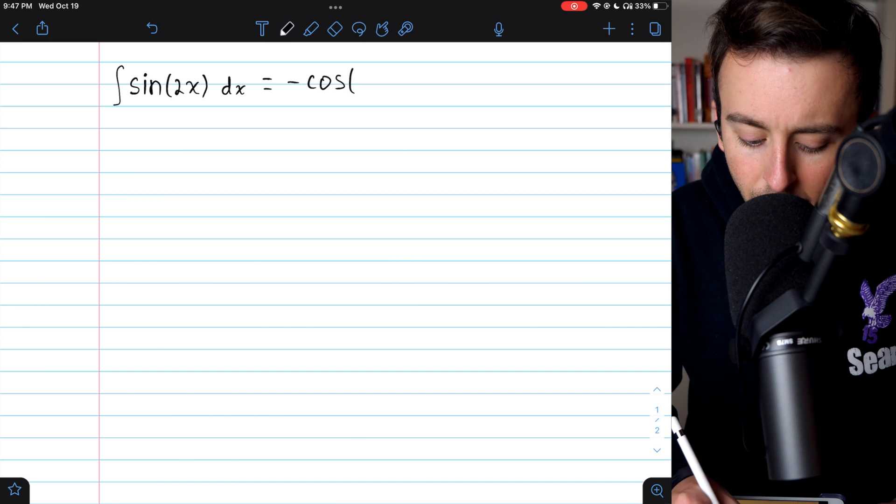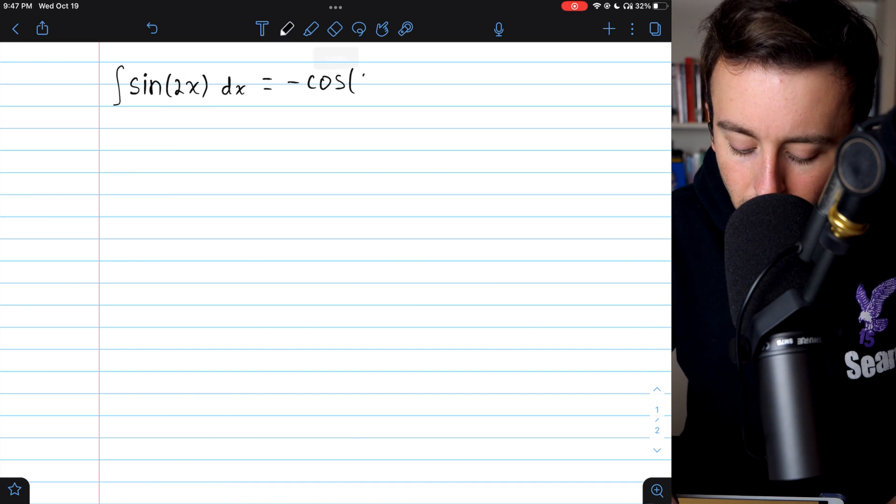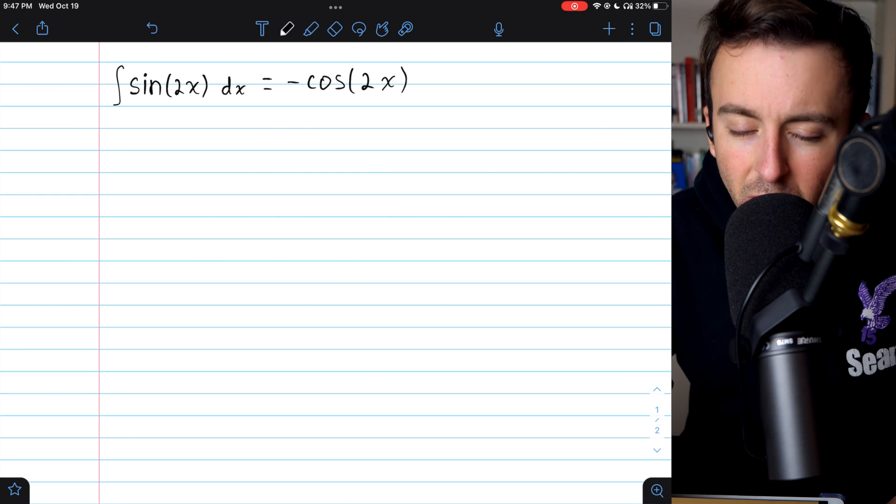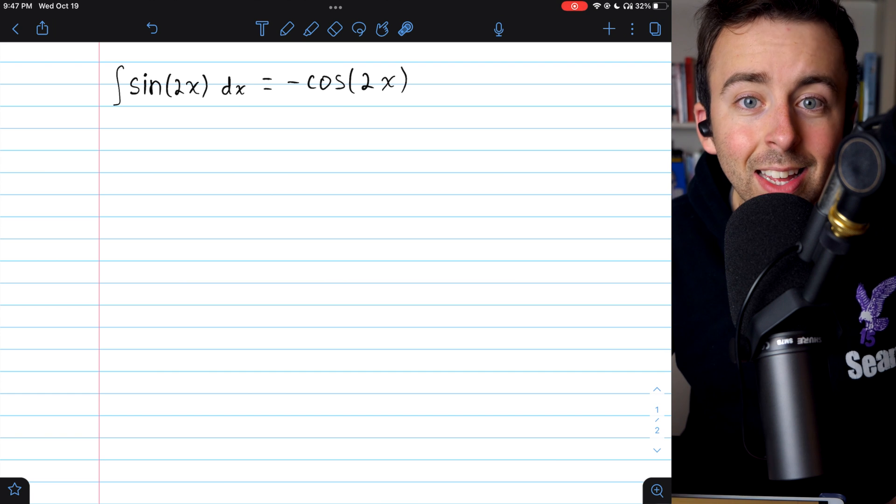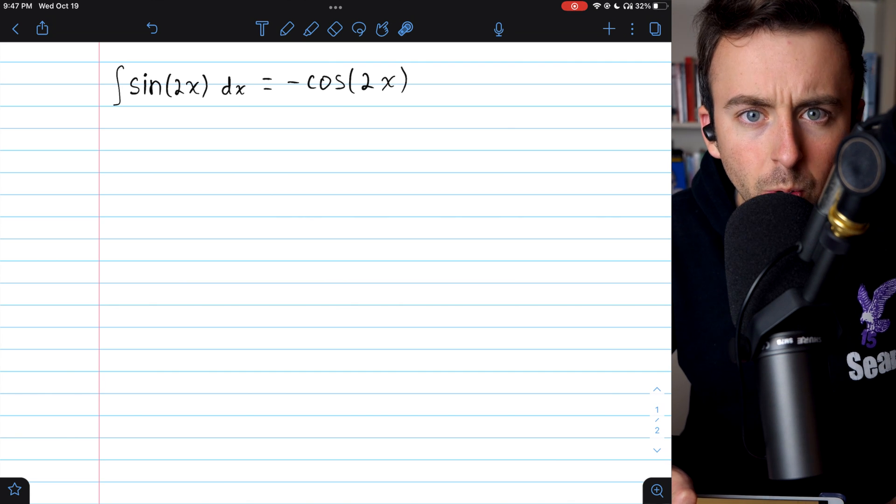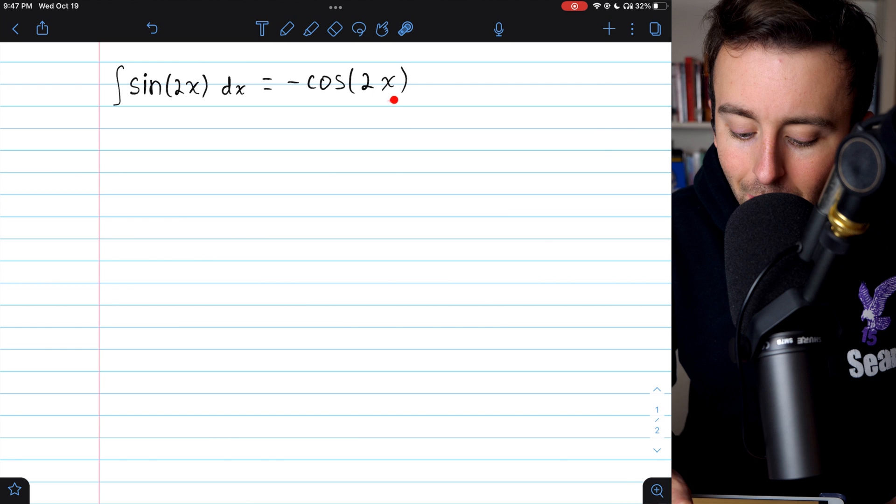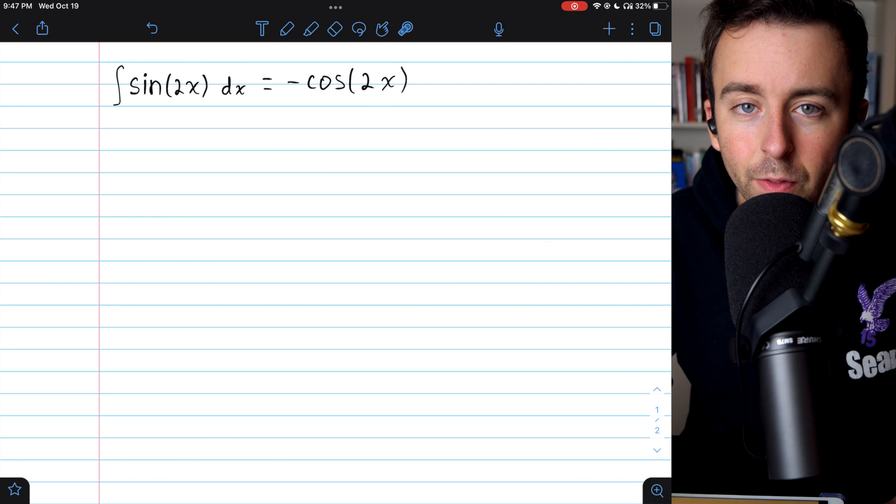Now inside the cosine function, I don't want to forget that I have 2x. We just have to remember that if we were taking the derivative of this, the chain rule would give us a factor of 2 because we'd have to multiply by the derivative of the inside function.